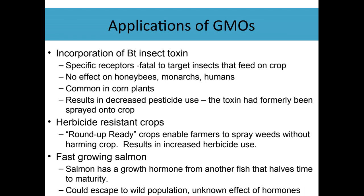One GMO application has been to incorporate a specific toxin — the Bt toxin — into foods that only targets certain insects. It affects a specific insect's growth but doesn't affect other types of insects. It's really the pests of that crop; it does not have an effect on honeybees, which are just going for pollen and nectar, or on monarch butterflies, which don't feed on these crops, and it has zero effect on the humans eating it because it's specific to insect growth. This is often added in corn plants.